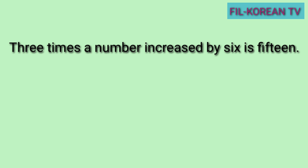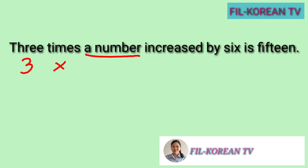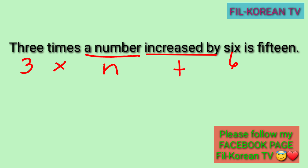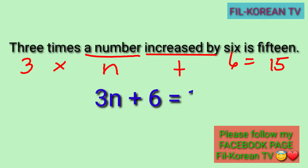Tingnan natin kung ano itong mga nandito sa sentence na ito. Yung three, then ang times — ito yung symbol. A number — ito ay variable, ibig sabihin hindi pa ito alam, maglalagay tayo ng letter dito. Pwede natin lagyan ito ng n. Itong increased by, ibig sabihin ito ay mag-plus. Then yung six. Itong is, ibig sabihin ito ay equals. Then yung fifteen. Isulat na natin ang equation: 3n + 6 = 15. Dito, ang times na symbol ay hindi na inilagay kasi sa algebra, kapag ang number at variable ay magkatabi, ibig sabihin yan ay magmumultiply.